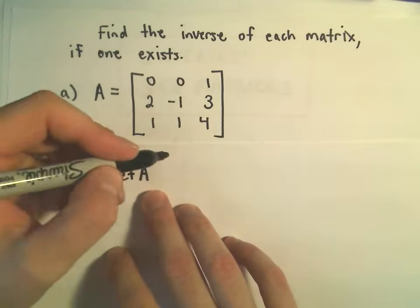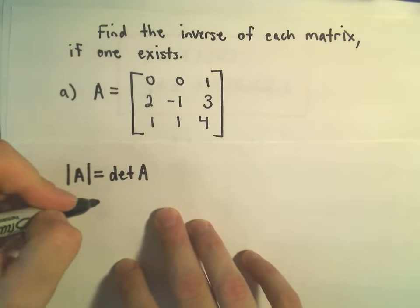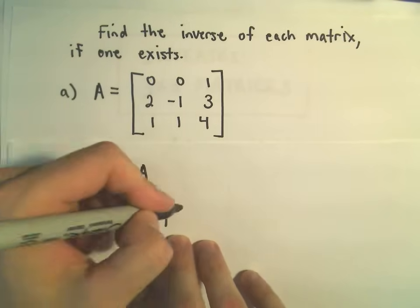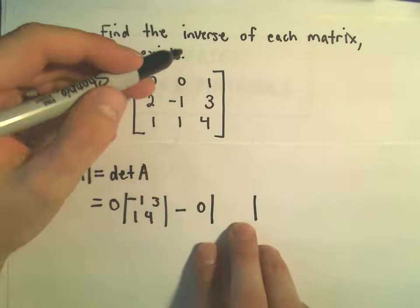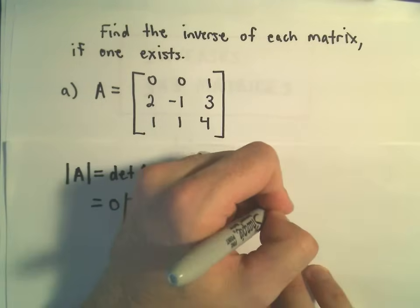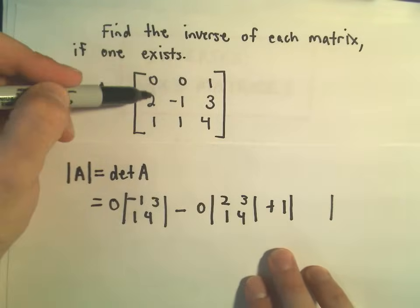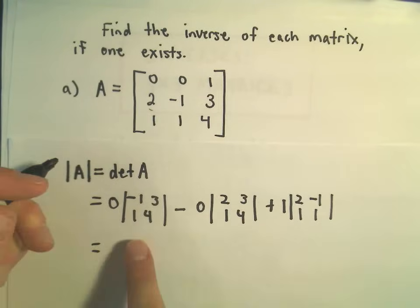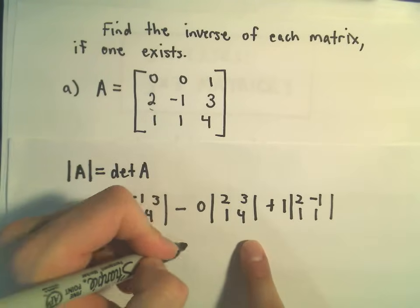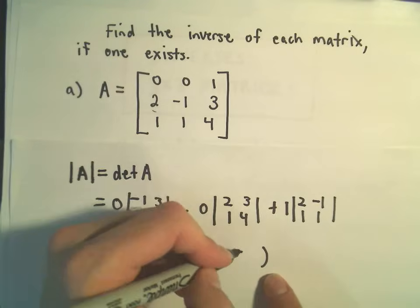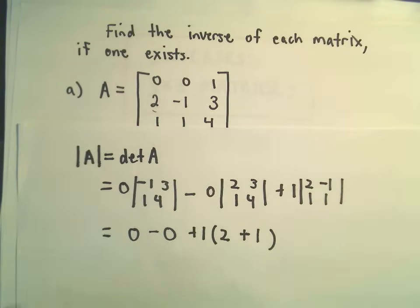To get the determinant of this matrix, I'm going to expand along the first row. So we get 0 times det([-1,3;1,4]), minus 0 times det([2,3;1,4]), plus 1 times det([2,-1;1,1]). The first two terms are 0. Then 1 times (2·1 minus 1·(-1)) = 1 times 3, so the determinant is 3.